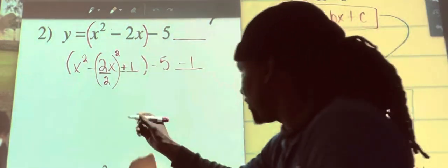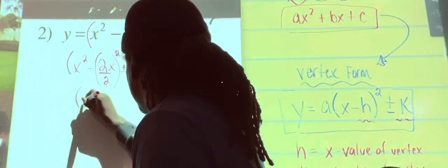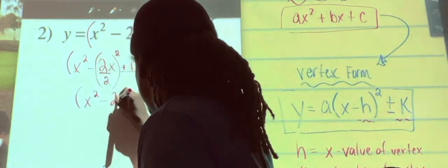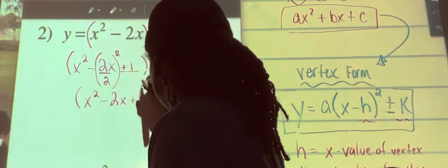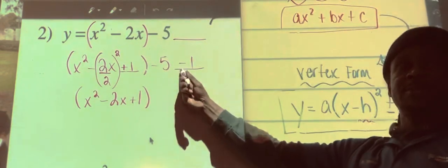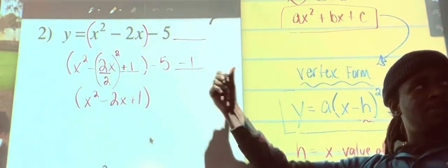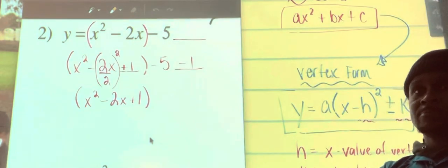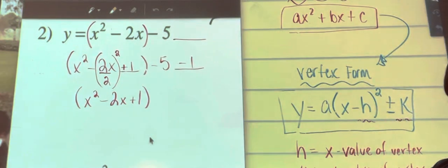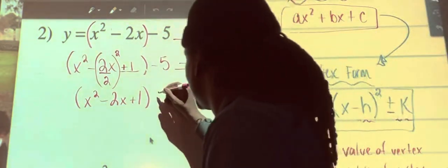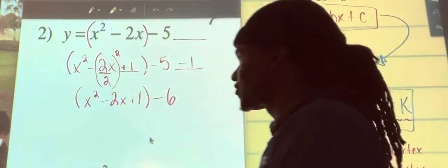Now, let's transfer everything down. X squared minus 2x plus 1. Now, what's negative 5 minus 1? Good, Pat. I said it before.